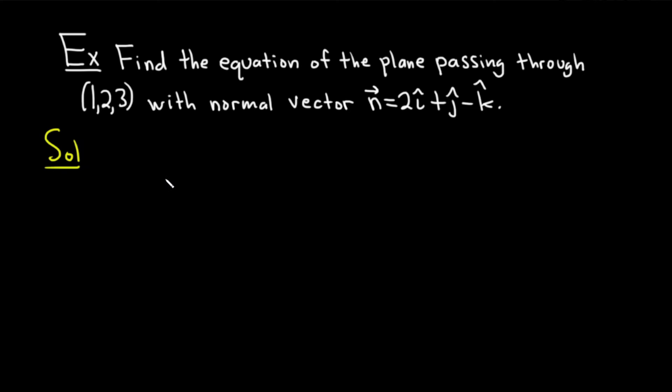So the formula for the equation of a plane is the following. It's basically a(x - x₀) + b(y - y₀) + c(z - z₀). This is a pretty easy formula to remember, and it's equal to 0. And so in all of this, x₀, y₀, and z₀, this is a point on your plane.